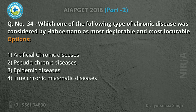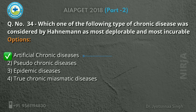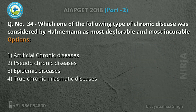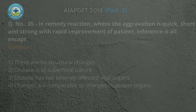Which of the following types of chronic disease are considered by Hahnemann as the most deplorable and most incurable? The answer is artificial chronic disease. This is given in Aphorism 74 — artificial chronic diseases are produced artificially in allopathic treatment by the prolonged use of heroic medicines in large doses.